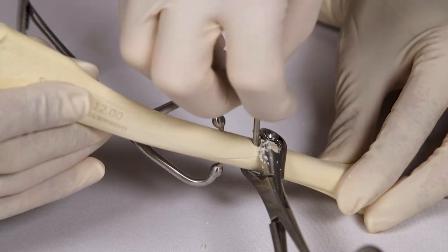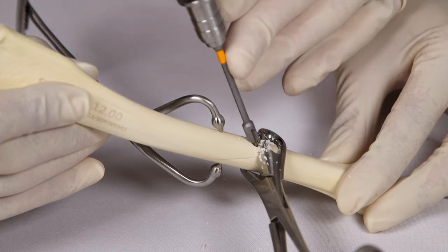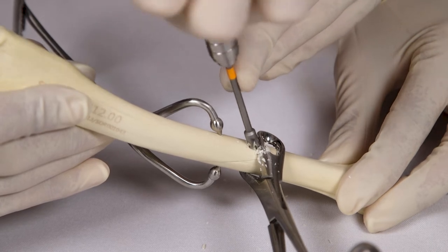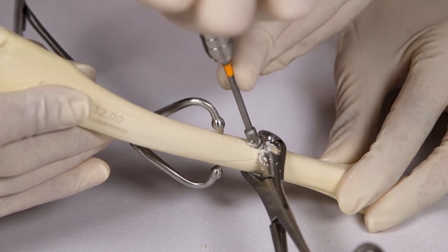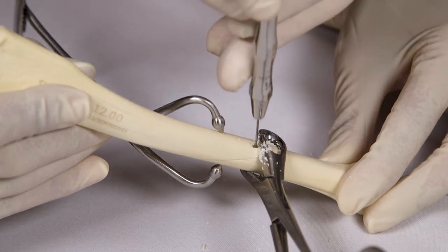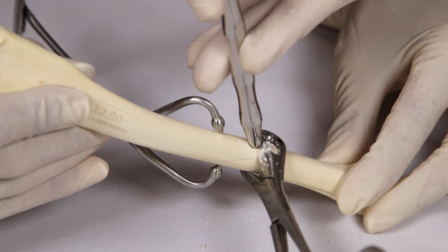A countersink is used to create a small depression in the bone surface. This allows the head of the screw to seat better on the bone. The depth of the hole is measured with the depth gauge and the appropriate length of screw is selected.